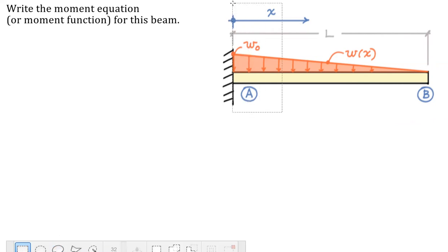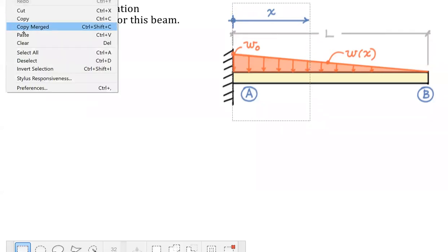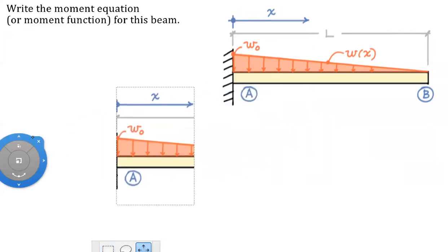Here's one. I'm going to detach from the fixed support at A and cut at distance x from the support. So there's one free body.